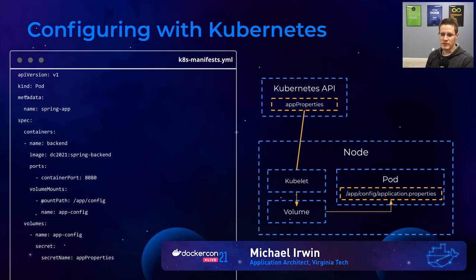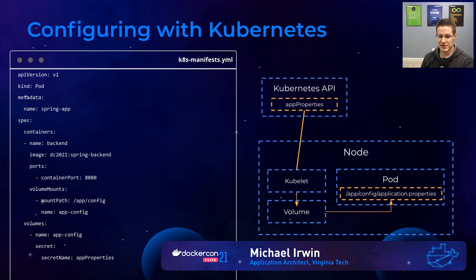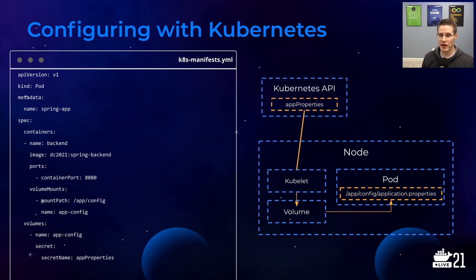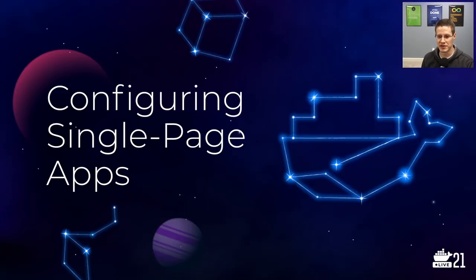With Kubernetes, I can do much the same thing — mount my secrets and create a secret that has my application.properties, create a volume mount, put it at the right location and let it go. It works just the same way. To the container, it's just a file on the file system. Let me talk about configuring single-page apps real quick.